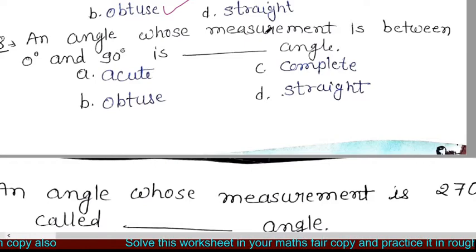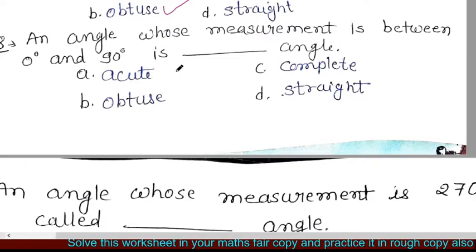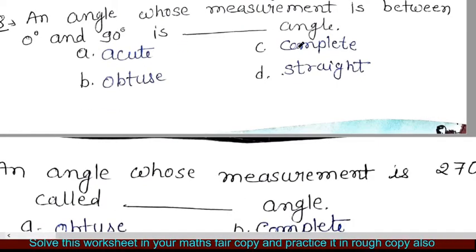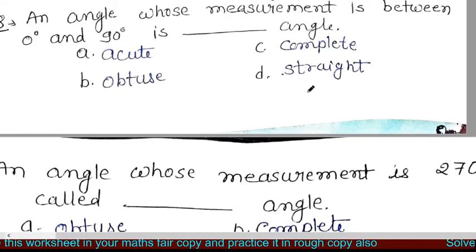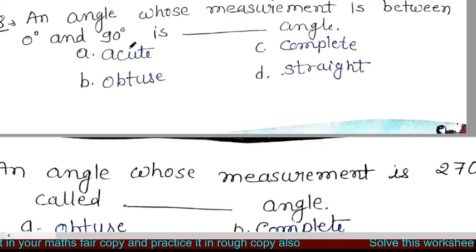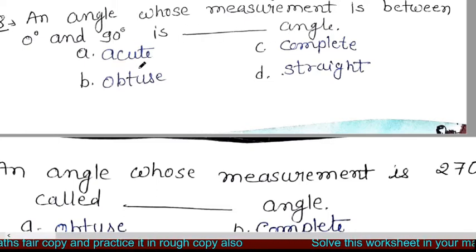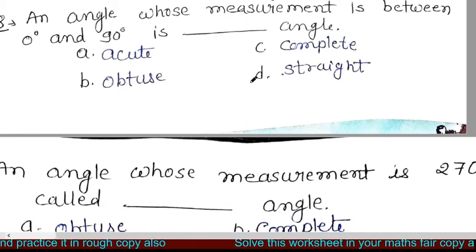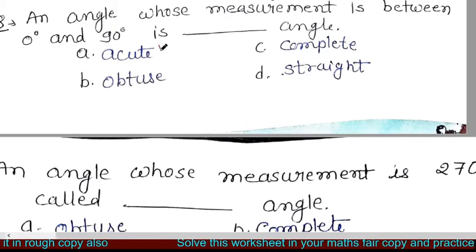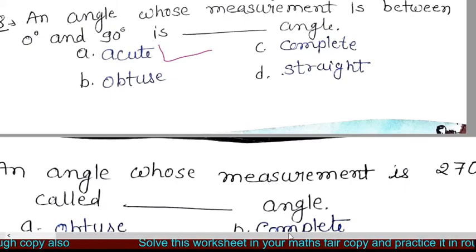An angle whose measurement is between 0 degrees and 90 degrees is a dash angle. Options: acute, complete, obtuse, and straight. ऐसा angle जिसका measurement 0 degree और 90 degree के बीच का होता है वह कौन सा angle होता है? 0 से 90 degree के बीच का angle होता है acute angle.